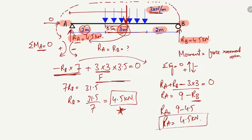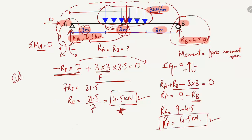Both support reactions RA and RB are equal at 4.5 kilonewtons each. This is because the uniformly distributed load acts at the center of the beam, so the load is equally distributed to both supports. Hope you guys understand — don't forget to subscribe to our channel for daily engineering videos. Thank you for watching.